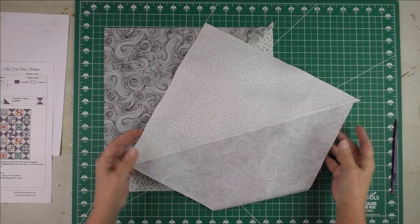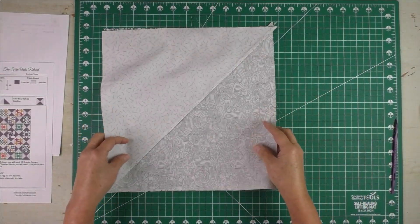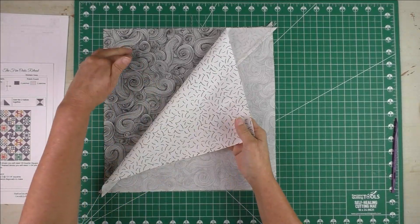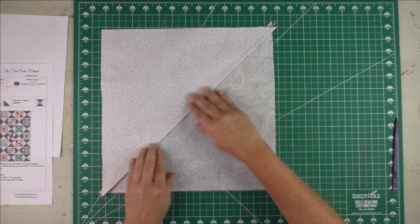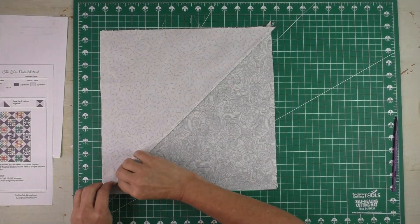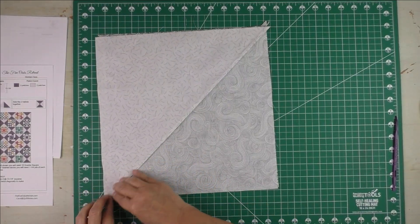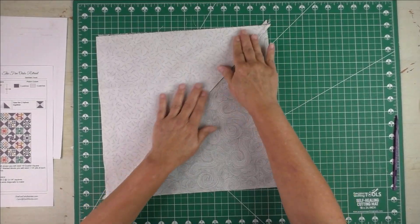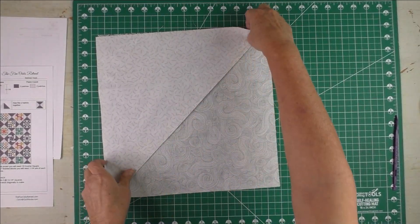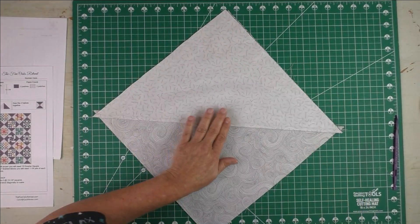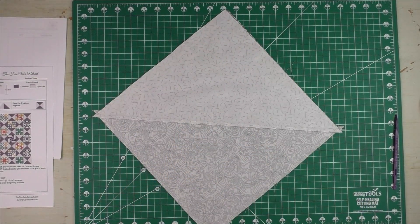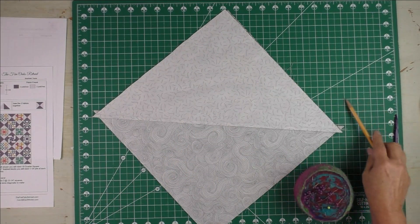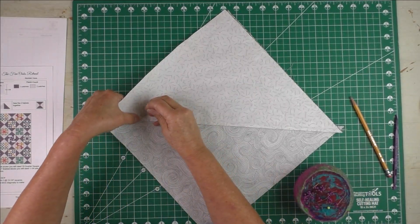Now we're going to take these two halves and put them together right sides together, and we're going to nest the seams. So here is the dark and here is the light, and that's the opposite on this side. You can feel since you pressed in one direction, you can feel if these seams are nesting. Then I put some pins just to keep them together. Make sure they're all nested.